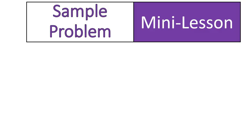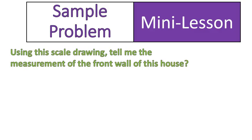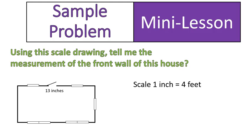Now let's do a sample problem. Using this scale drawing, tell me the measurements of the front wall of this house. So here's a drawing of a house, obviously like bird's eye view. If I'm saying that 1 inch is equal to 4 feet, what is the measurement of the front wall of this house?